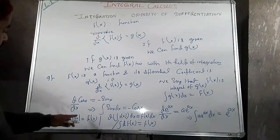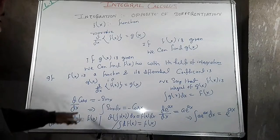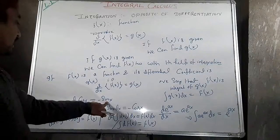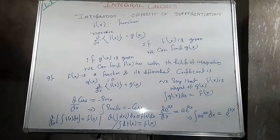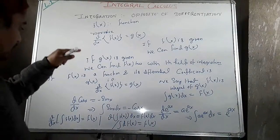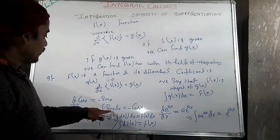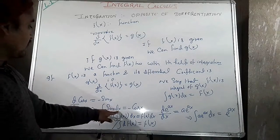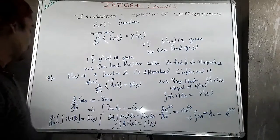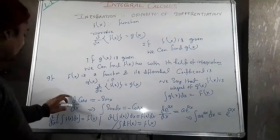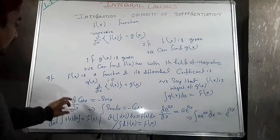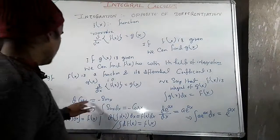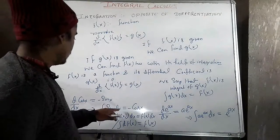For example: differentiation of cos(x) with respect to x gives minus sin(x), and differentiation of sin(x) gives cos(x). So the differentiation of cos(x) gives minus sin(x), and differentiation of sin(x) gives cos(x).